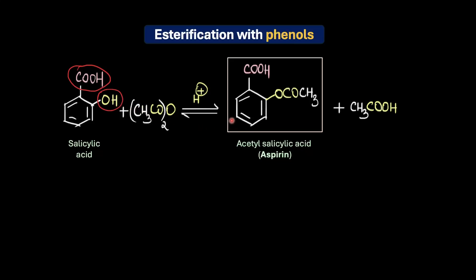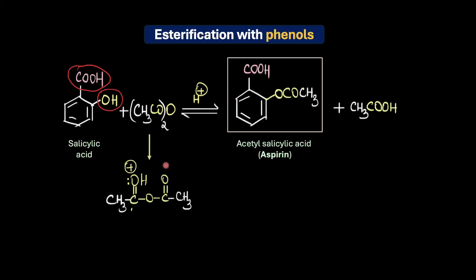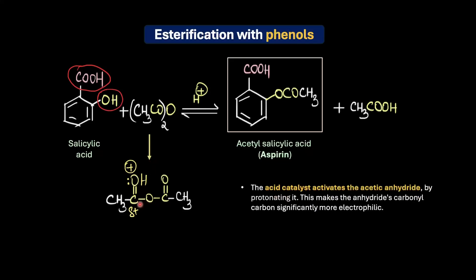In aspirin synthesis, acidic conditions are employed rather than a mild base like pyridine. The acid activates the acetic anhydride by protonating it, making the anhydride's carbonyl carbon significantly more electrophilic. Notice that the byproduct is acetic acid — a weak acid that does not require neutralization by an added base in the same way that HCl from an acid chloride would. So in aspirin synthesis, just a tiny bit of acid like sulfuric acid or phosphoric acid is used — just enough to help with activation, but not so much that the reaction slows down entirely.